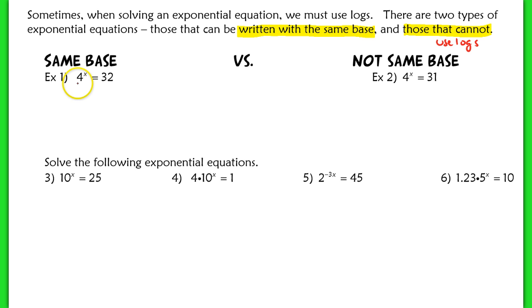For example, if I see 4^x = 32, I don't use logs at all. I just rewrite 4 as 2^(2x), equaling on the other side 2^5. Because I have the same base, I can equate my exponents. So 2x = 5, and x would equal 5/2.